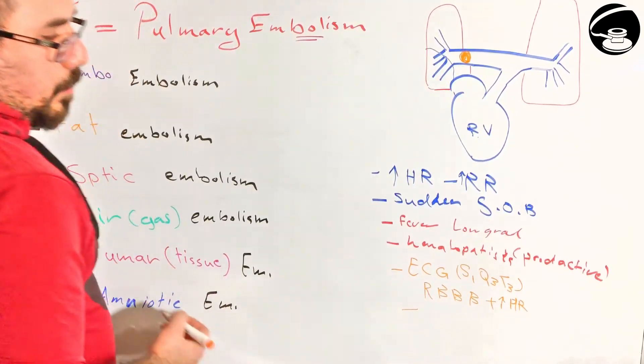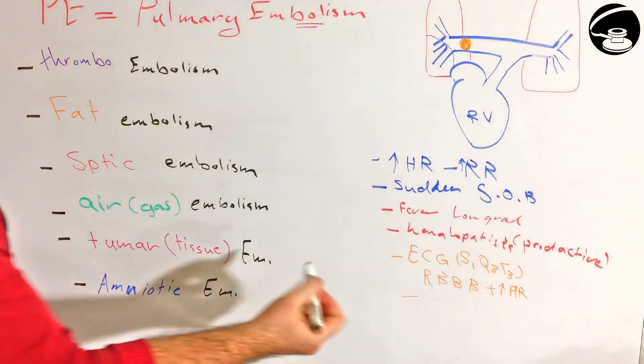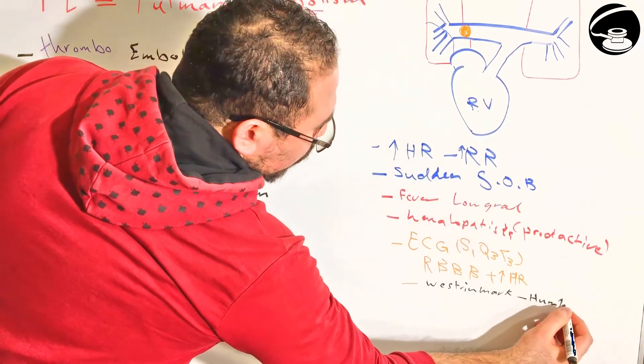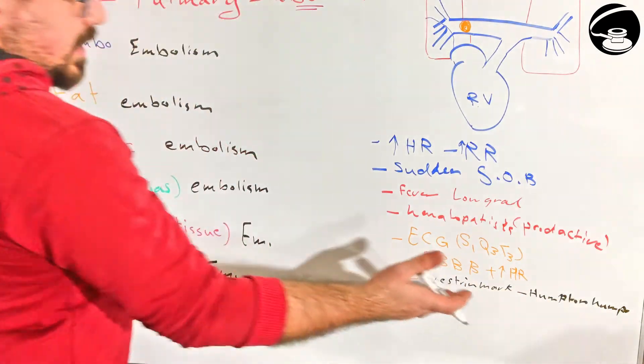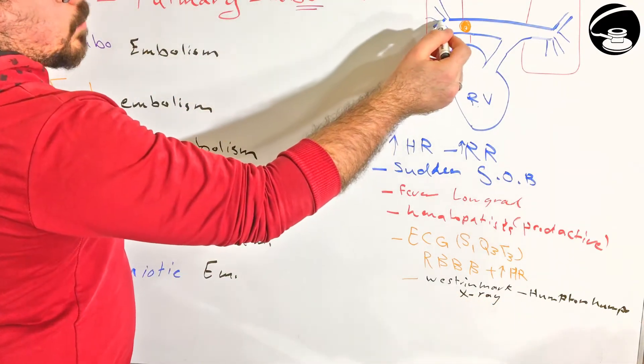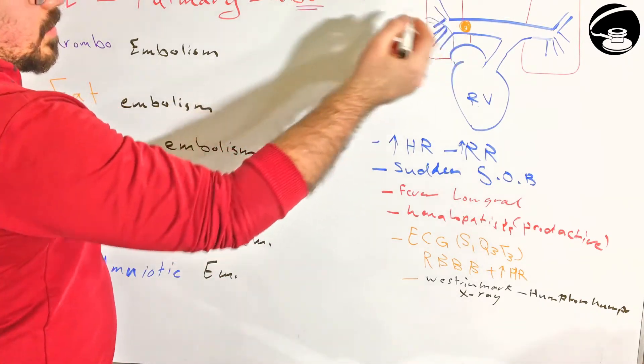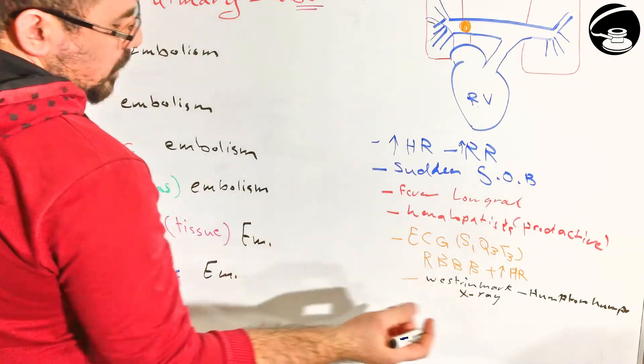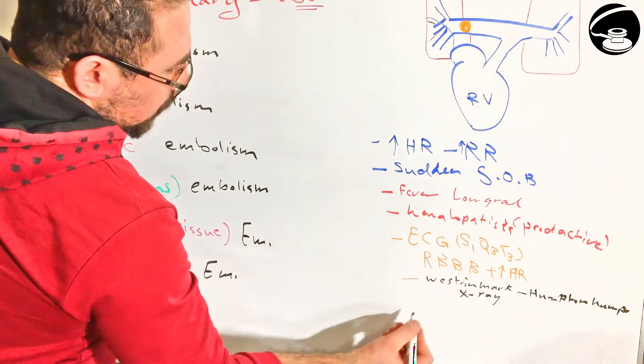Also, you can see on chest x-ray nothing. But sometimes you will find they will ask you if you see something called a Westermark sign or a Hampton hump. That's a deformity that happens on x-ray sometimes in pulmonary embolism, which is basically an infarct at the shape of the artery, like a triangle or wedge shape. But not always. This is very important. Clinically it's not very important because you won't always see it, but I wrote it because sometimes you'll find it in exams.